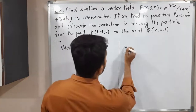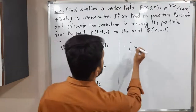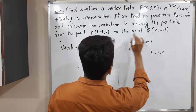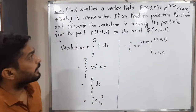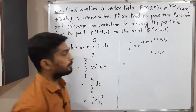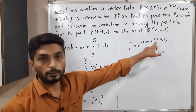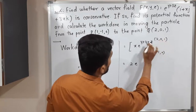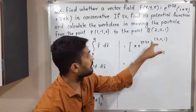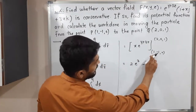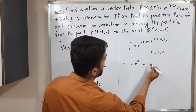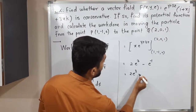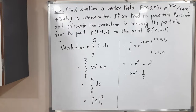So work done = φ(Q) − φ(P), where φ = x·e^(y+3z). Point P is (1, −1, 0) and Q is (2, 0, 1). Putting upper limit Q: x=2, y=0, z=1 gives 2·e^(0+3) = 2e³. Putting lower limit P: x=1, y=−1, z=0 gives 1·e^(−1+0) = e^(−1) = 1/e. Therefore work done = 2e³ − 1/e. This is the required work done.